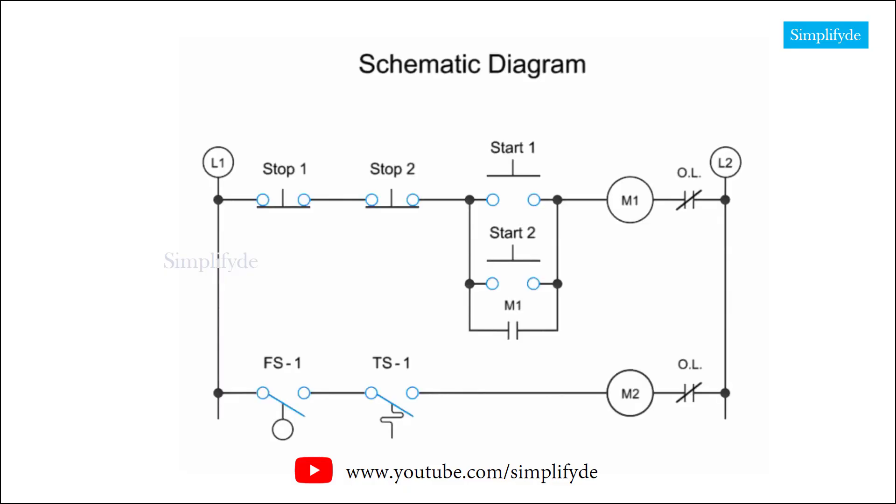Schematic diagrams with graphical symbols are used to show the electrical connections and functions of a specific circuit. This line or ladder diagram shows various electrical components interconnected by lines. These lines are arranged like rungs on a ladder.